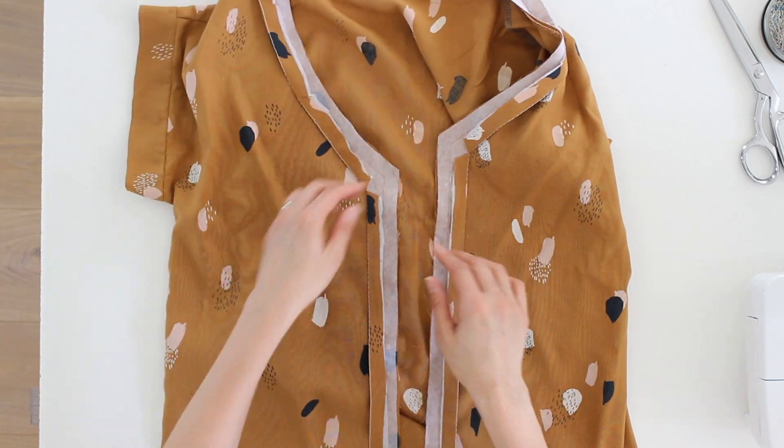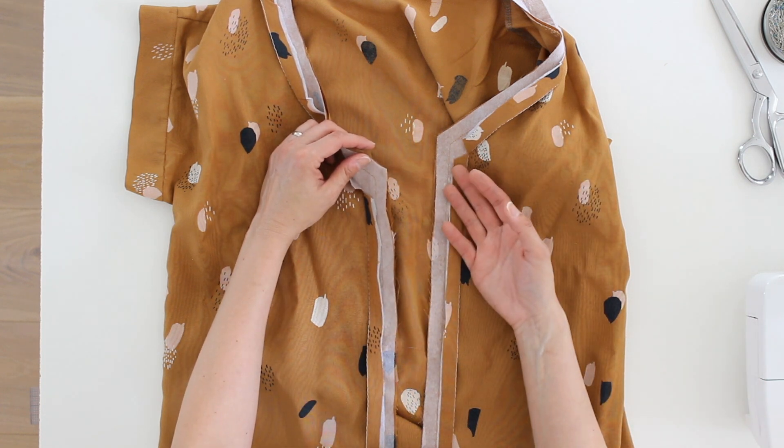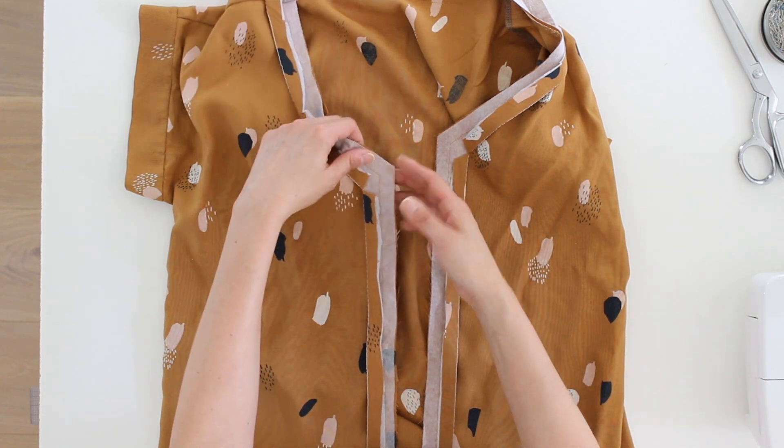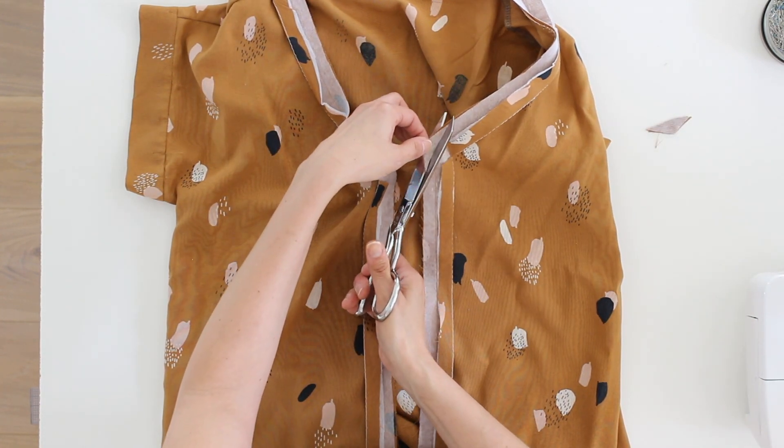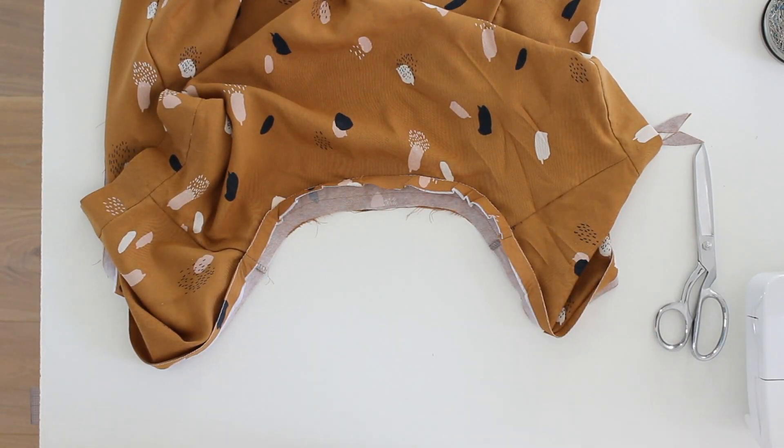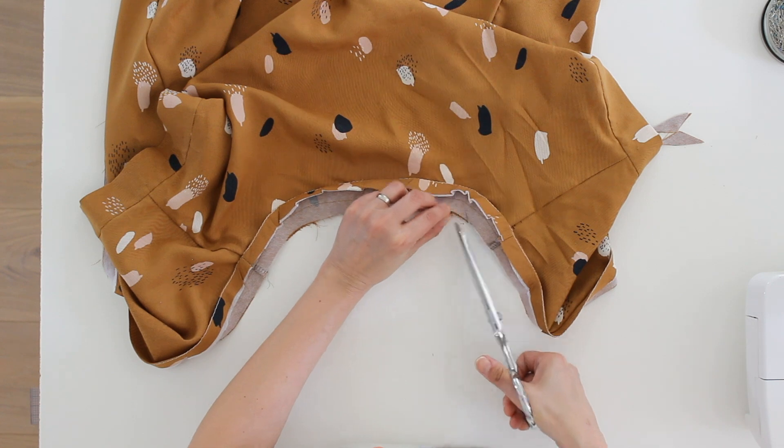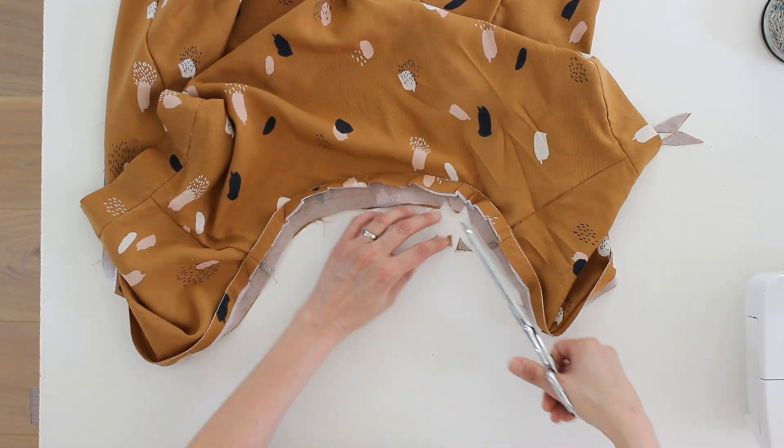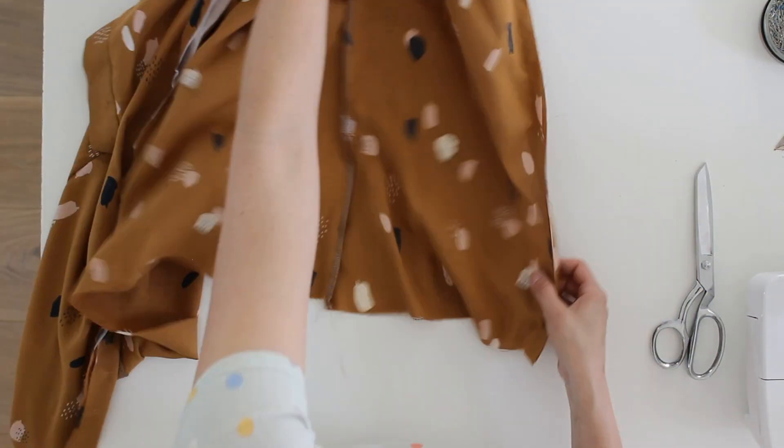Here's what this looks like now that I'm done stitching, so before I turn, press, understitch, all of those things that go into sewing a neck facing, I am going to clip the corners and the curves. And I'm not going to go into all the understitching and those steps because I have a separate video just about neck facings that I will link below if you don't know how to understitch, press, topstitch, all of those things. They are clarified in that video.